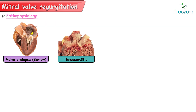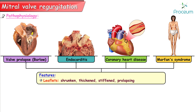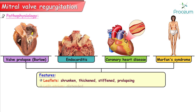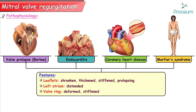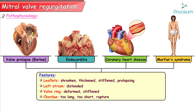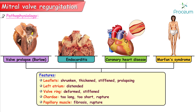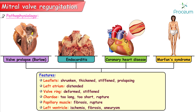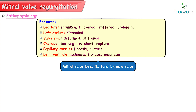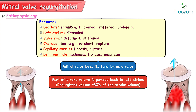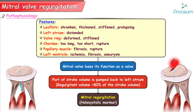Mitral valve prolapse, endocarditis, coronary heart disease, and Marfan syndrome can all lead to shrunken, thickened, stiffened, or prolapsing leaflets, resulting in a distended left atrium that deforms and stiffens the valve ring, making the chordae too long or too short and causing rupture. This also adds insult to the papillary muscle through fibrosis or rupture resulting from left ventricular ischemia, fibrosis, or aneurysm. All of these factors contribute to the mitral valve losing its function, causing part of the stroke volume — the regurgitant volume, approximately 80% — to be pumped back into the left atrium, producing a holosystolic murmur of mitral regurgitation.